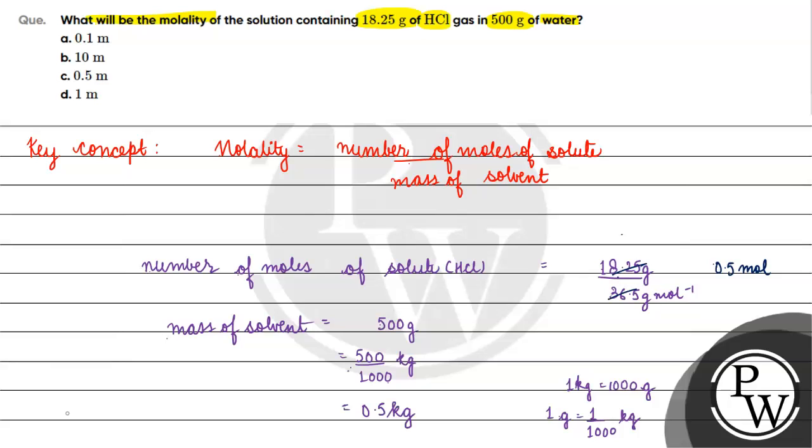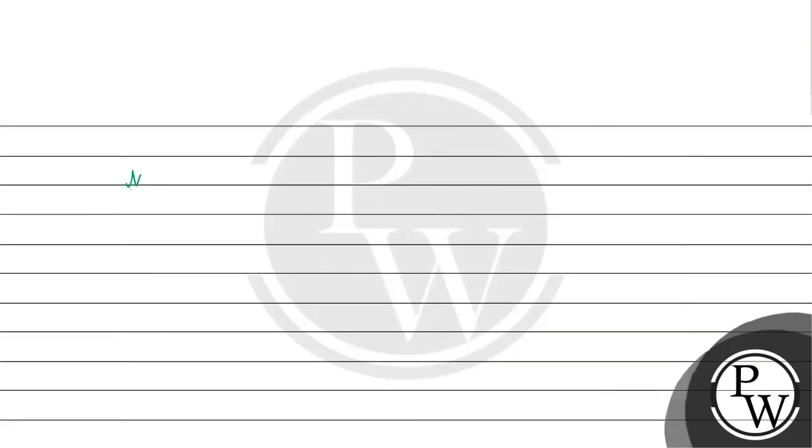Now what will be the molality? Molality will be equal to the number of moles, 0.5 mol by 0.5 kg. This will be 1 mol per kg. This will be 1 molal.